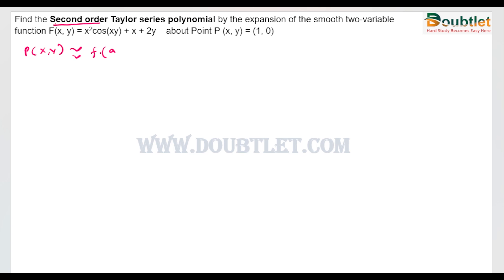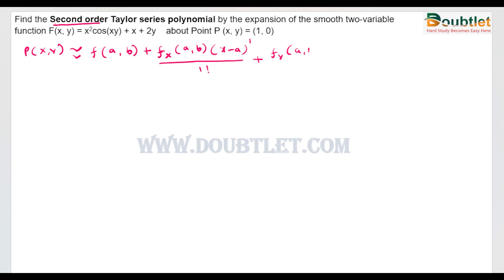The Taylor series equals f(a, b) plus the first-order partial derivative with respect to x at point (a, b) multiplied by (x − a) divided by 1 factorial, plus the first-order partial derivative with respect to y at (a, b) multiplied by (y − b) divided by 1 factorial. These three terms represent the first-order Taylor series approximation.